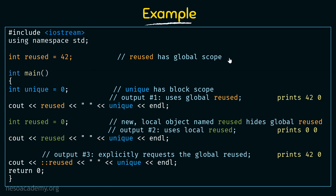Global scope means any variable declared globally can be accessed from anywhere within the program. Something declared globally can be accessed even from within a function. Next, inside the main function, I declare another integer variable named unique and initialize it to 0. This variable has a block scope because it is defined within the main function and valid only within that block.